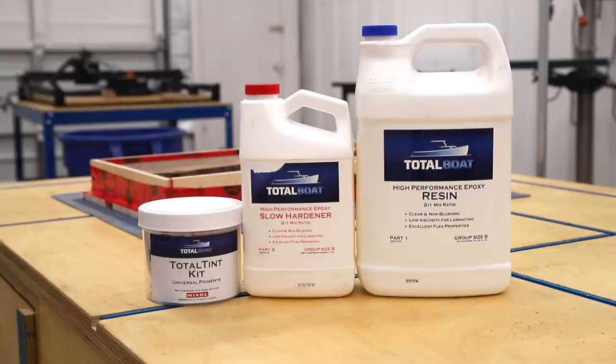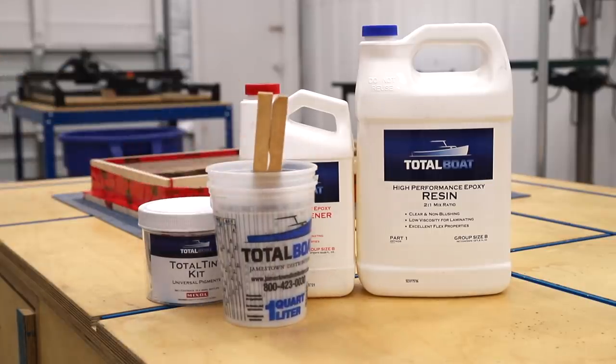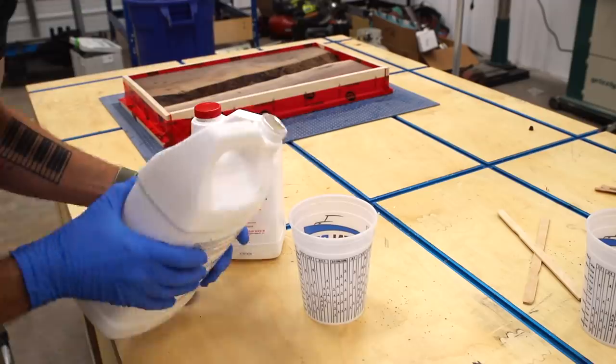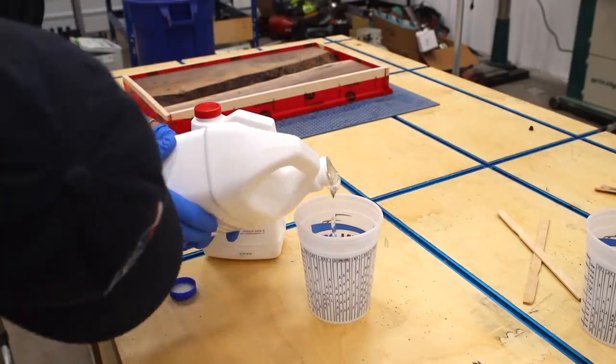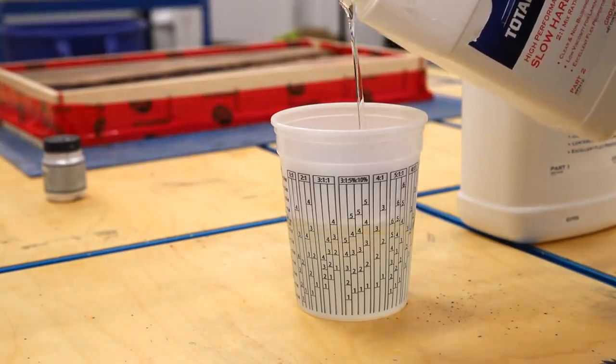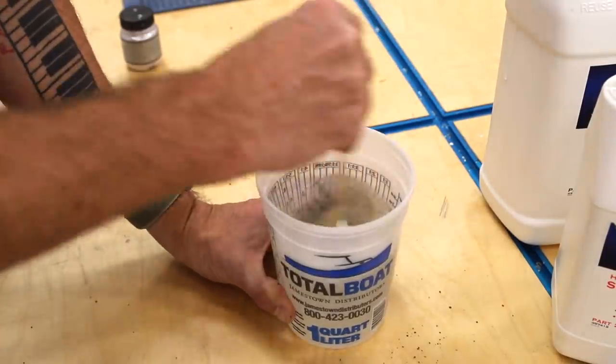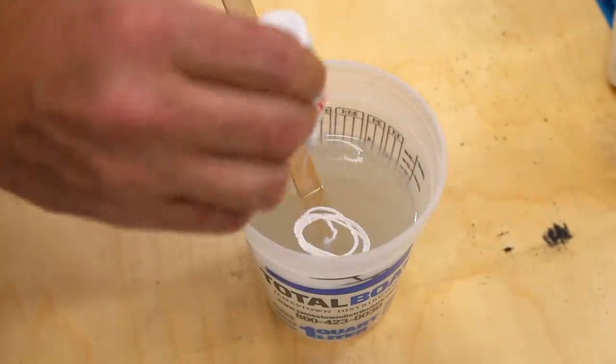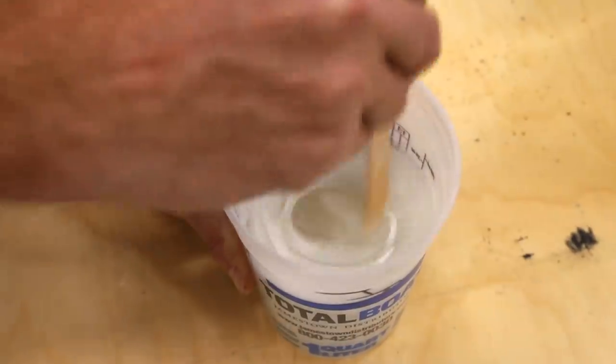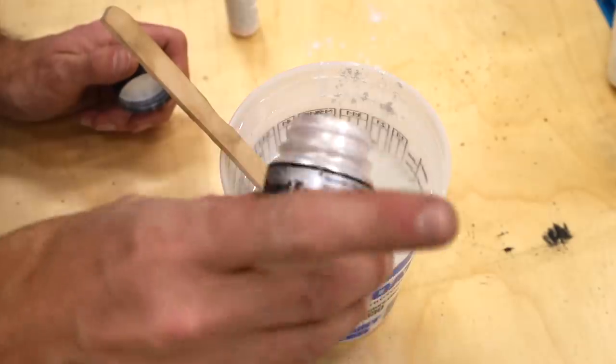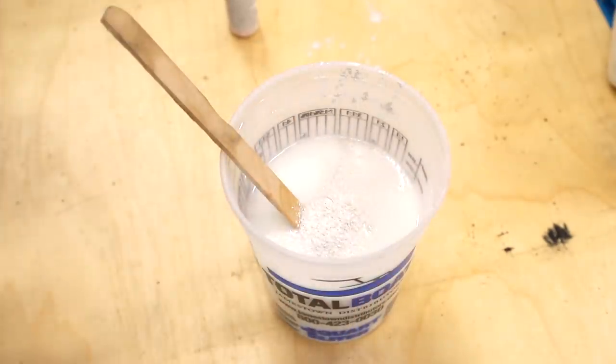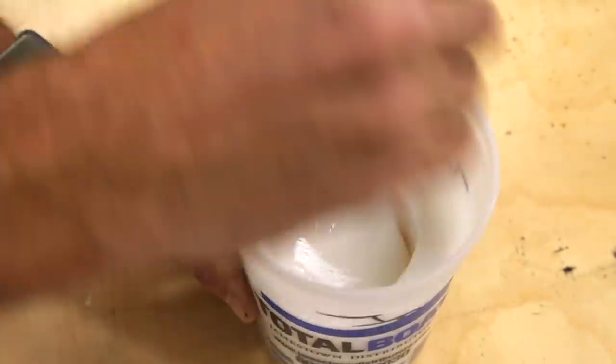Moving on to the epoxy pours, I'm using Total Boat's 2 to 1 high performance epoxy with slow hardener. Now my last few projects, I've used thick set epoxy, which is fantastic because you can pour deeper, but the trade-off is I can get a project like this done much faster because I can re-pour every hour instead of waiting a few days for everything to cure. I added some white pigment and some white pearl powder and got started pouring the epoxy into the form.